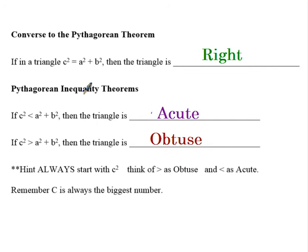When you're doing these problems, it says that you should always start with the c squared. Always think of the greater than symbol as obtuse and the less than symbol as acute. If you don't start with c squared, those signs are going to be backwards and it gets kind of confusing. And please remember that c is always going to be the biggest of the three numbers.